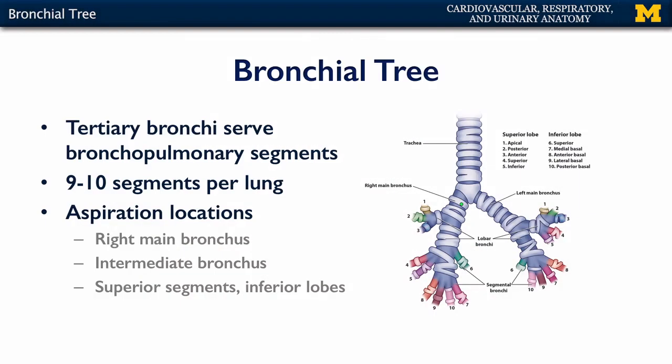The bronchopulmonary segments are color-coded and numbered, corresponding to the apical, posterior, and anterior segments of different parts of the lobes of the lung. There's some degree of variation — generally the right lung has 10 bronchopulmonary segments, whereas the left side typically has nine but may have up to 10.